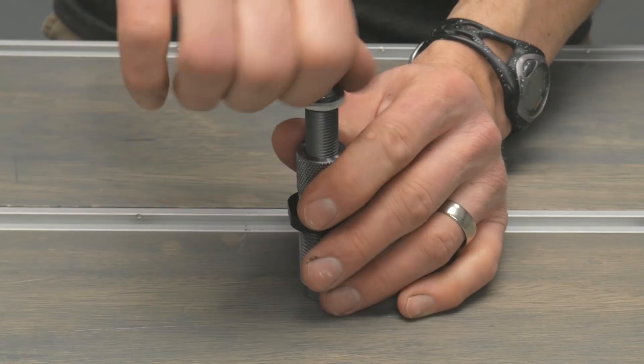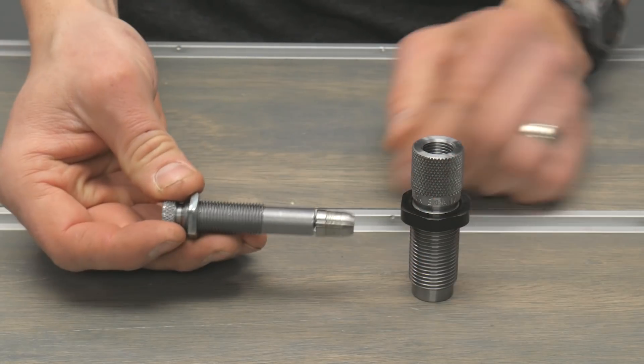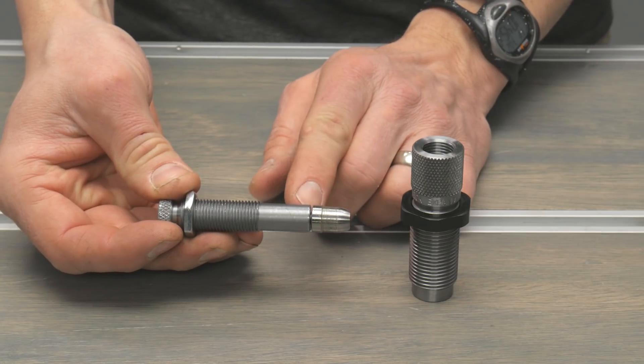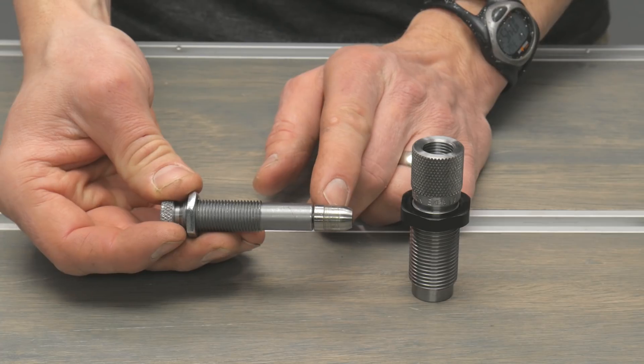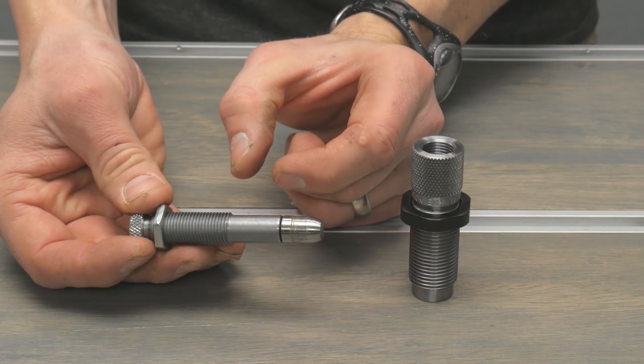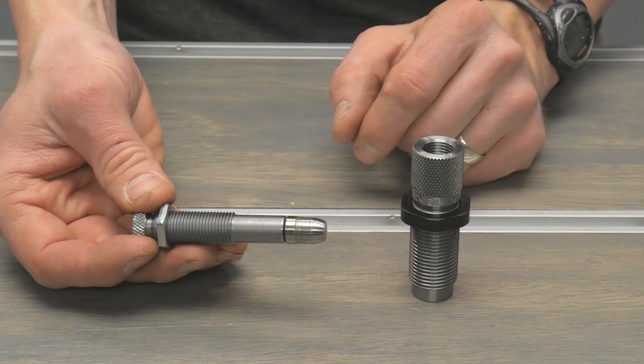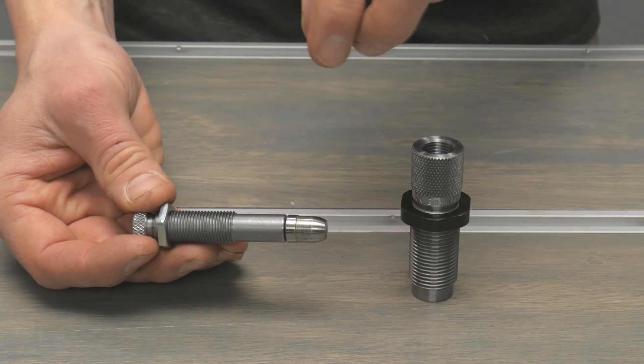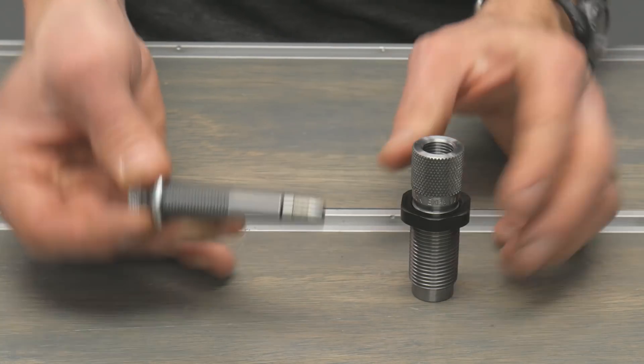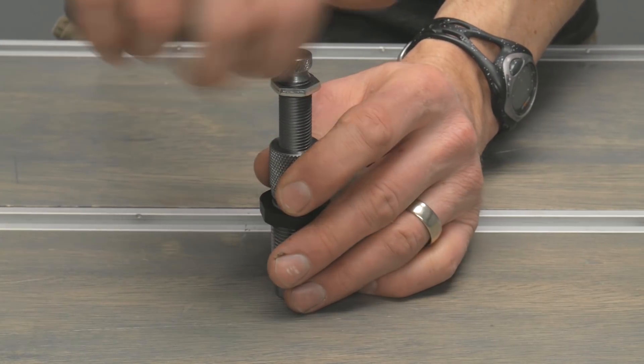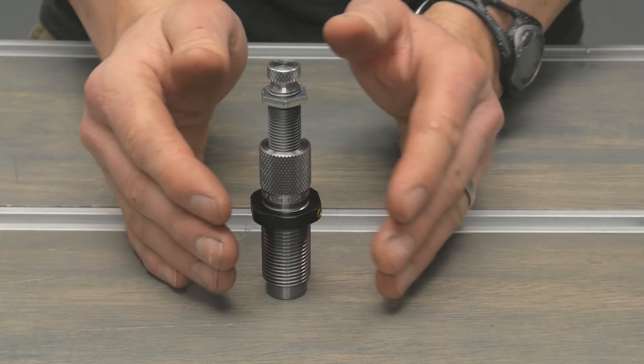Then we have the Lyman unit, similar to the RCBS. What's interesting here is this is a two-step design. There is a section of the expander plug that will enlarge the case mouth slightly to just under bullet size for a very loose press fit, so your bullet can stay aligned. Then there is a kicker which actually bells the case mouth itself. This is the die I wanted to show you on the press. We're going to set this up and verify our setup.